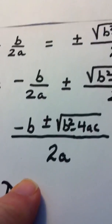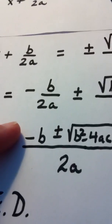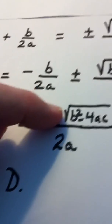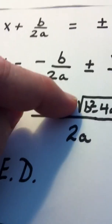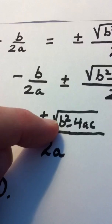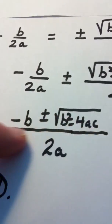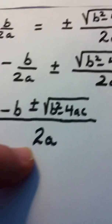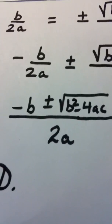To the tune of Frere Jacques: opposite of b, opposite of b, plus or minus square root, plus or minus square root, b squared minus 4ac, b squared minus 4ac, all over 2a, all over 2a. Hooray, hooray, hooray.